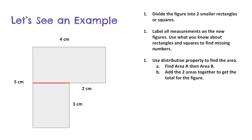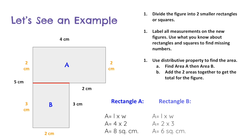First, you have to divide the figure into two smaller rectangles or squares and label them A and B. Label all measurements on the new figure. Use what you know about rectangles and squares to help find missing numbers. Use the distributive property and find the areas of rectangle A and B. After finding both areas, we add them back together to get our total area for the whole figure.